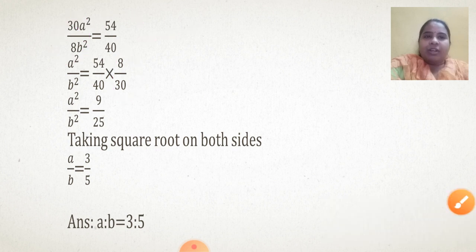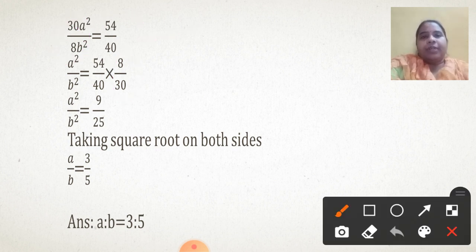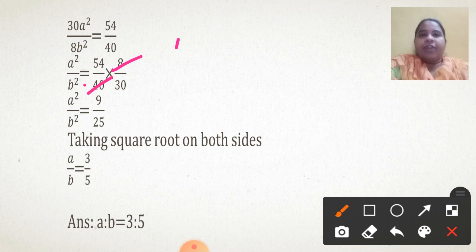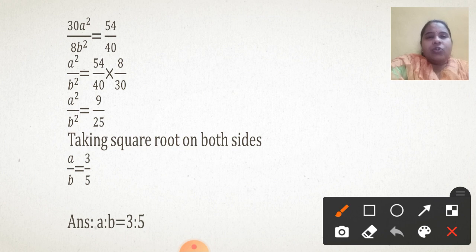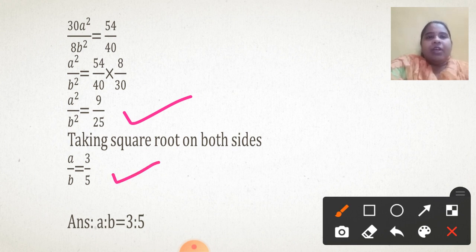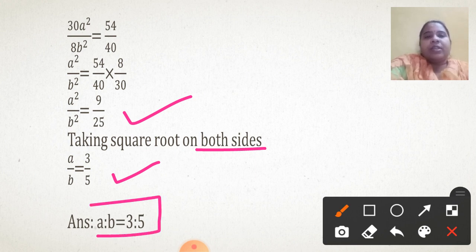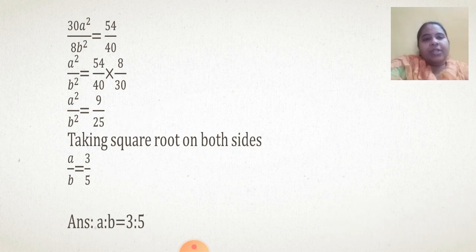Multiplying through, we get a² upon b² equal to 54 upon 40 times 8 upon 30. After cancellation — 8 fives are 40, 6 nines are 54, 6 fives are 30 — what is left is 9 upon 25. So a² upon b² is 9 upon 25. Taking square root on both sides, we get a upon b as 3 upon 5. I am ignoring the negative part and taking only the positive ratio. So a upon b = 3 upon 5 is the first part of the answer.